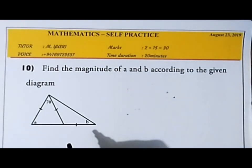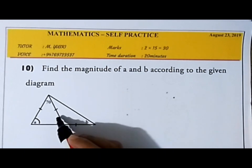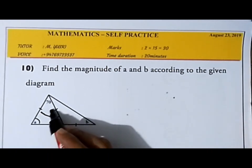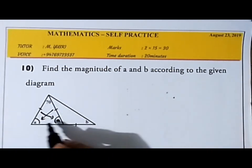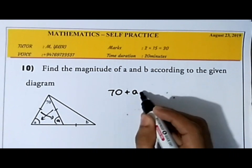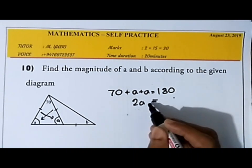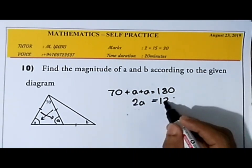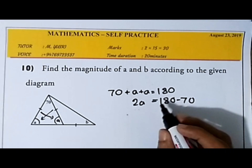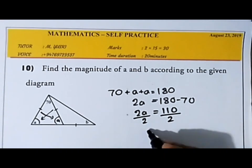Find the magnitudes of a and b. For angle a: since it's an isosceles triangle, opposite angles of equal sides are equal, so both base angles are a. The sum of all three angles equals 180: 70 + a + a = 180, so 70 + 2a = 180. Taking 70 to the right: 2a = 110. Dividing by 2, a = 55.